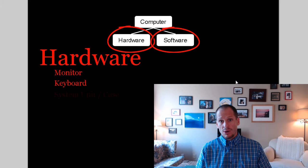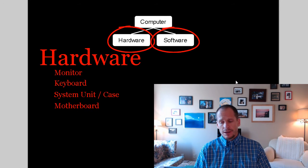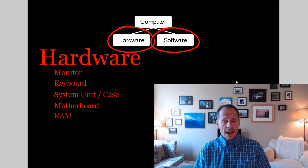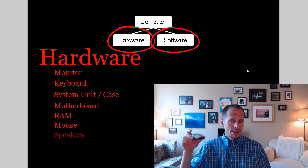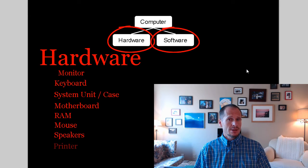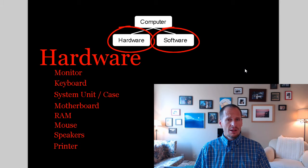So your monitor, your keyboard, the system unit or case, the motherboard, RAM, the mouse, speakers, the printer — all of that stuff is hardware.